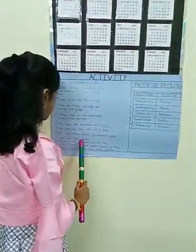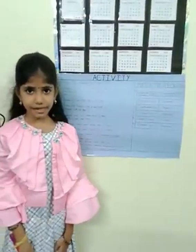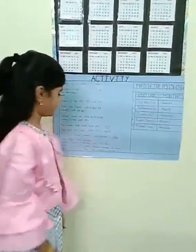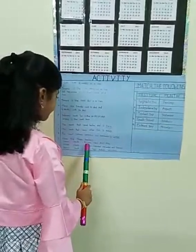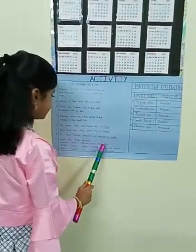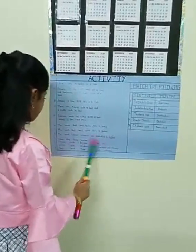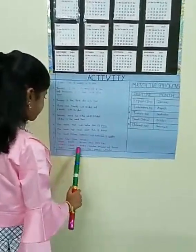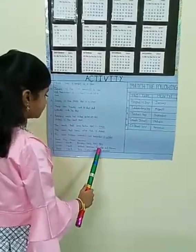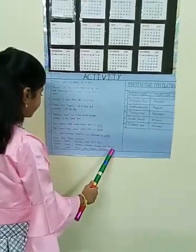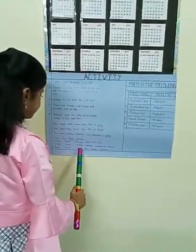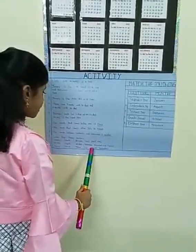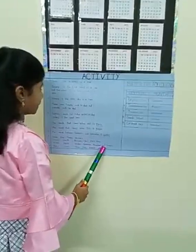Name the three seasons. Summer season, winter season, rainy season. Summer season: February, March, April, May. Winter season: October, November, December and January. Rainy season: June, July, August, September.